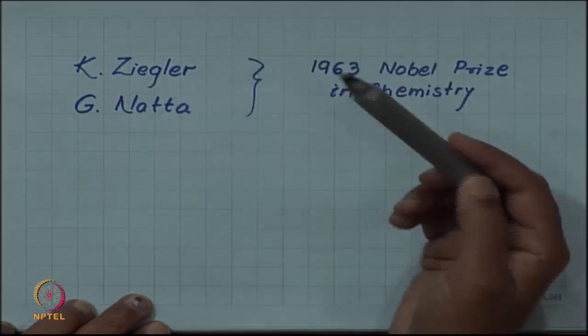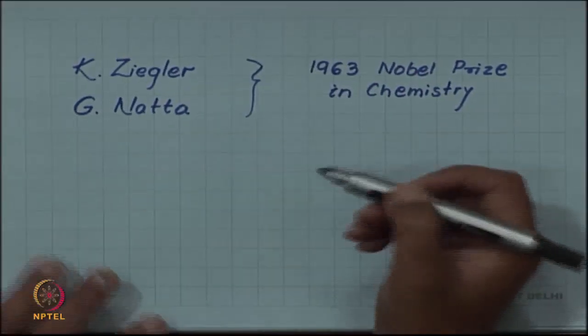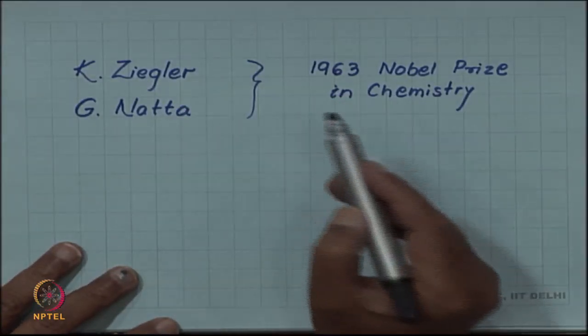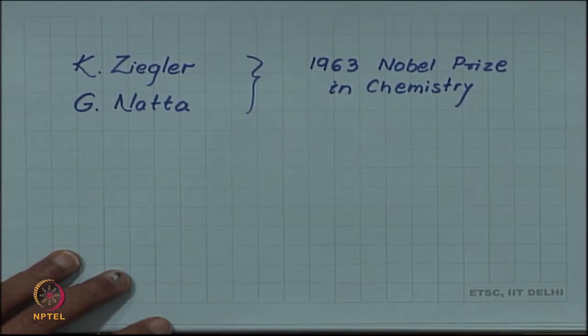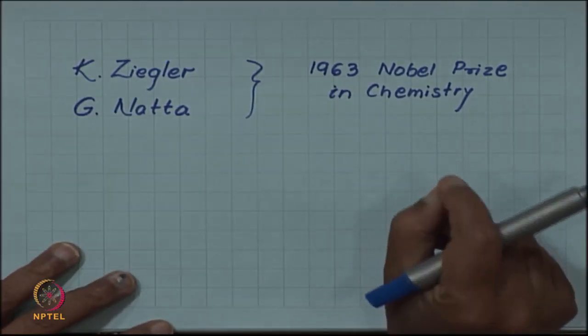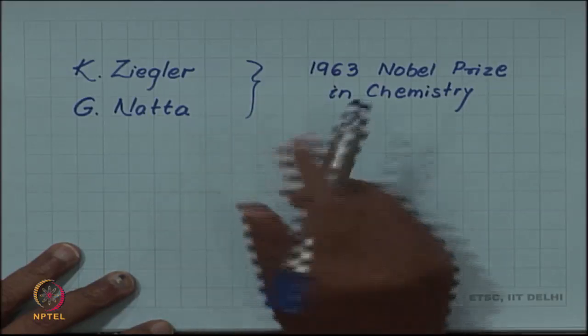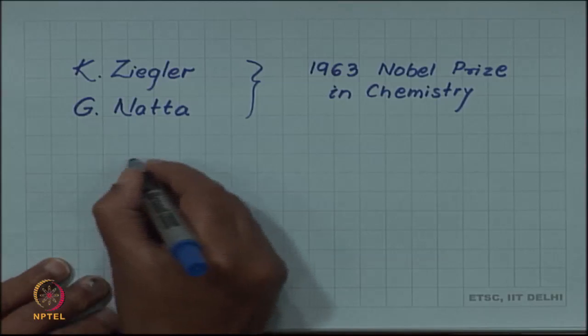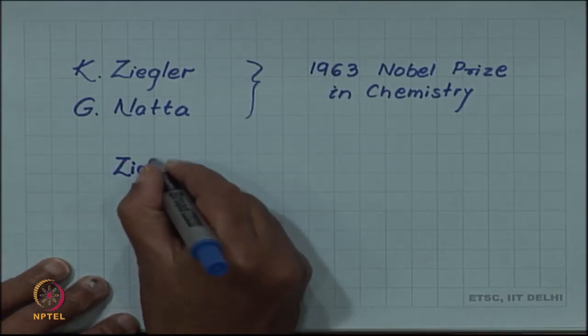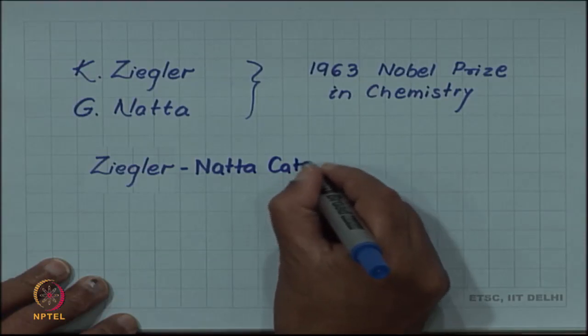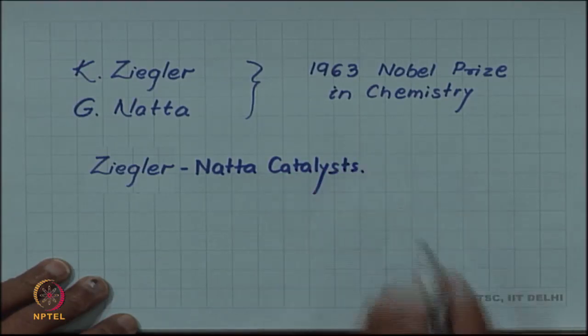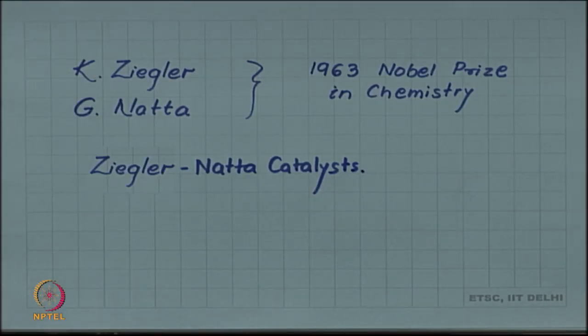The question is how to form these different configurations or different tacticity. Ziegler and Natta actually achieved this success in trying to obtain different kinds of polymers—atactic, isotactic, or syndiotactic—depending on the control of catalysts. These catalysts are called the Ziegler-Natta catalysts. Different catalysts give you different kinds of tacticity. The 1963 Nobel Prize in Chemistry was given to these two scientists for this achievement.